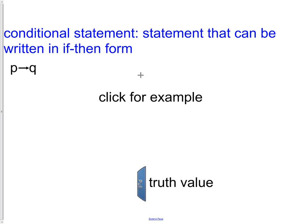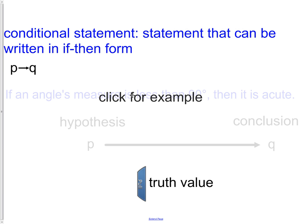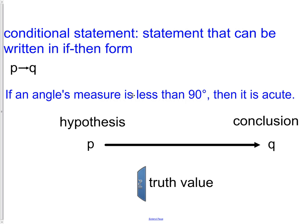For an example, we could say if an angle's measure is less than 90 degrees, then it is acute. Our hypothesis is the P part, which says an angle's measure is less than 90. Our conclusion, it is acute, is the Q part. The truth value for that is if an angle's measure is less than 90, then it is acute. That is a true statement.